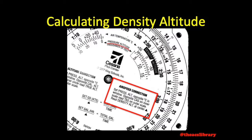Assuming we are at a pressure altitude of 6,500 feet, with the winds and temps aloft reporting a temperature of 12 degrees Celsius at 6,000 feet, based on the standard lapse rate of negative 2 degrees Celsius per 1,000 feet we climb, we can assume that the temperature at 6,500 feet is 1 degree cooler than at 6,000, so we'll say 11 degrees Celsius. The next step is to align our pressure altitude and temperature.